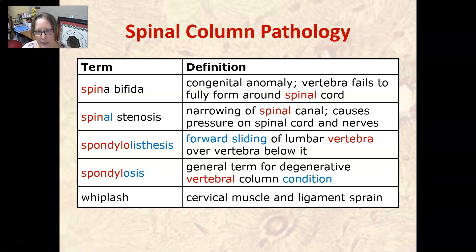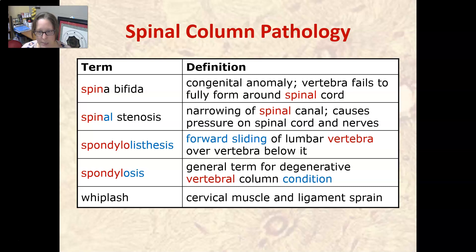Spina bifida is a congenital anomaly, so something that a baby is born with, where the vertebra fails to fully form around the spinal cord, and so the spinal cord can be sticking out. Spinal stenosis is a narrowing of the spinal canal, which causes pressure on the spinal cord and the nerves that come out of the spinal cord.